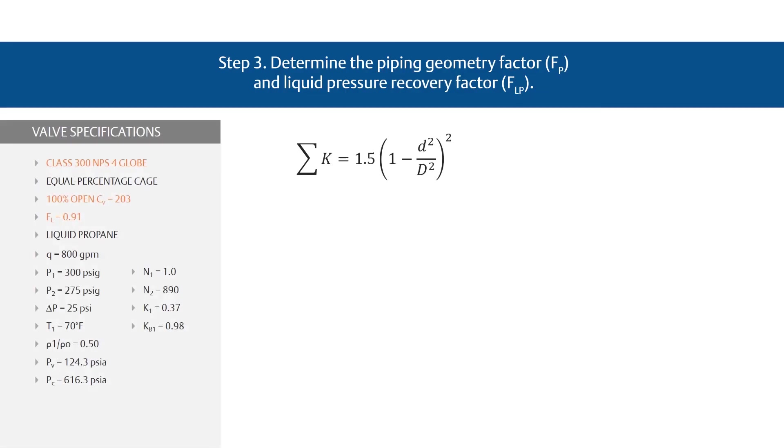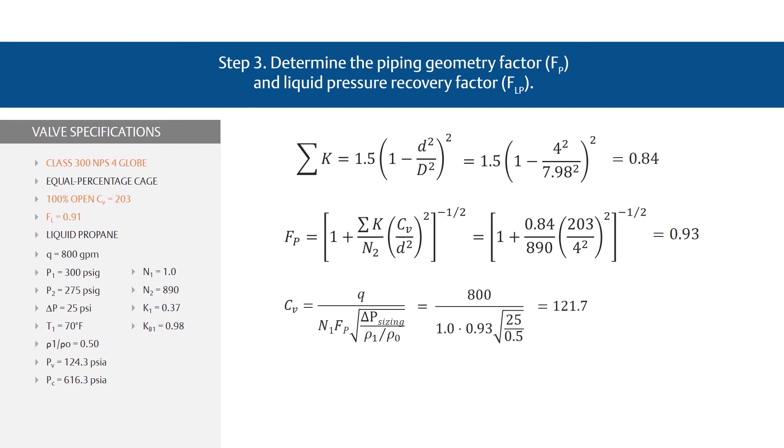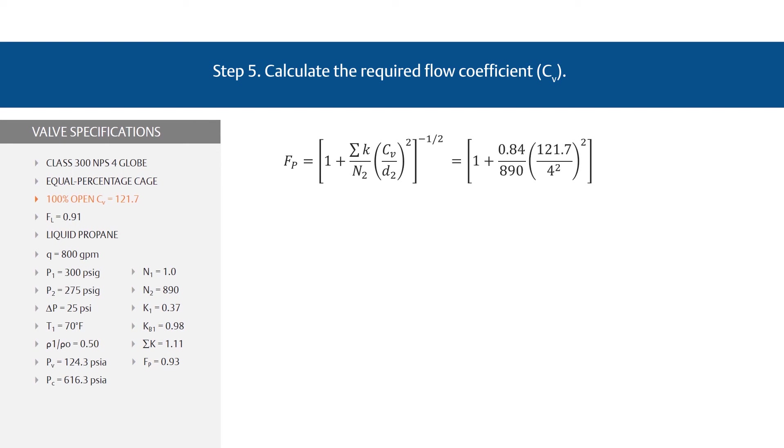Recalculate the F sub P in step 3 using an assumed CV value of 203. First, find a new sigma K value using the equation. Plug in your variables for a new sigma K value of 0.84. Now recalculate F sub P using this new sigma K value for a new F sub P value of 0.93. Enter this value back into the CV equation from step 5 for a new CV of 121.7. This solution indicates only that the NPS 4 valve is large enough to satisfy the service conditions given. There may be cases where a more accurate prediction of the CV is required. In such cases, the required CV should be redetermined using a new F sub P value based on this new CV. In this example, CV is 121.7. When we insert that into the equation, we get a new F sub P of 0.97.